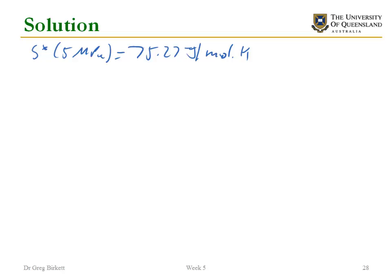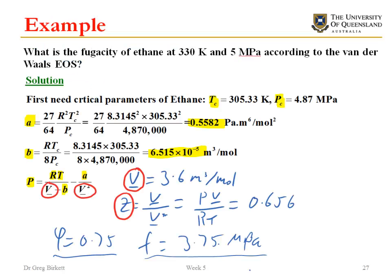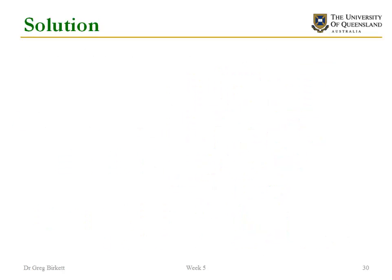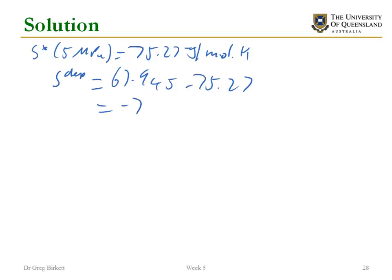Now that I've got that I can calculate my S departure. S departure is equal to my real S, which is here, so 67.945 minus 75.27. That's equal to negative 7.325, which again is what I would expect.